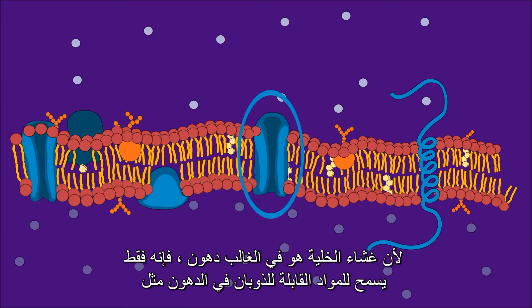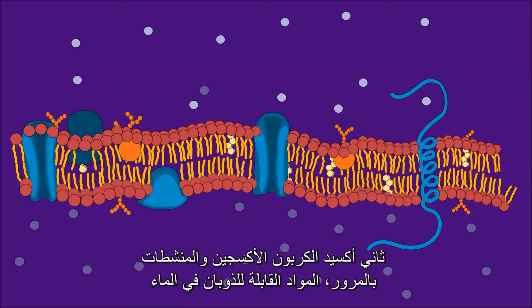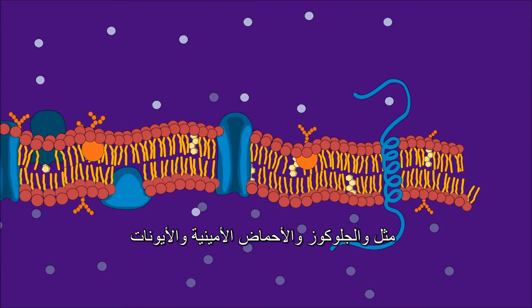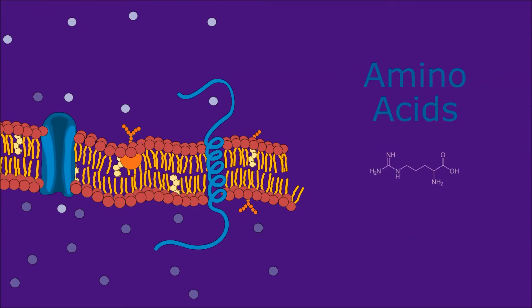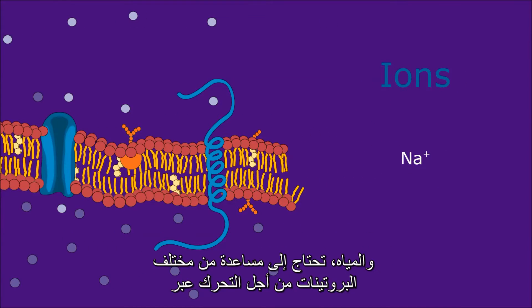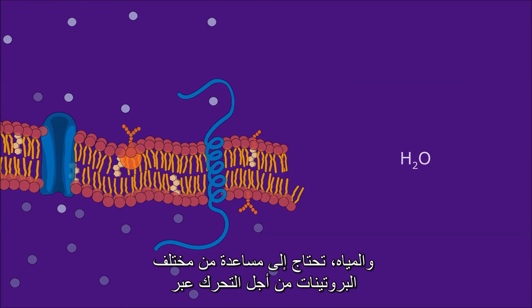Because the cell membrane is mostly lipid, it only allows lipid-soluble substances like oxygen, carbon dioxide, and steroids to pass through. Water-soluble substances such as glucose, amino acids, ions, and water need the help of the various proteins in order to move across the membrane.